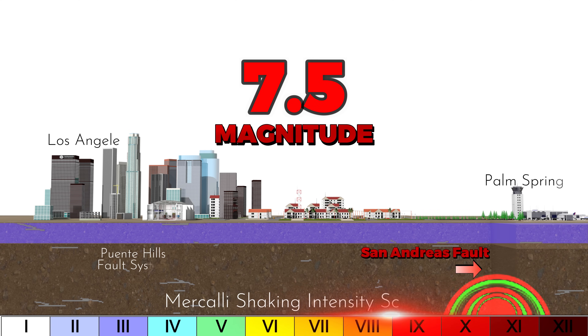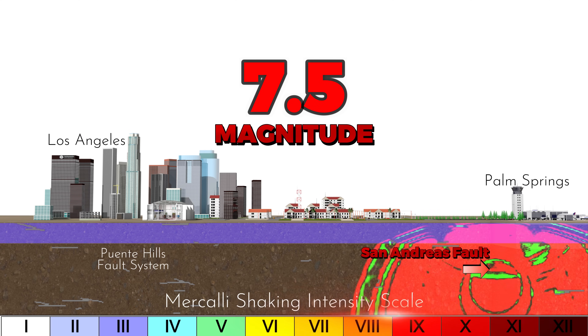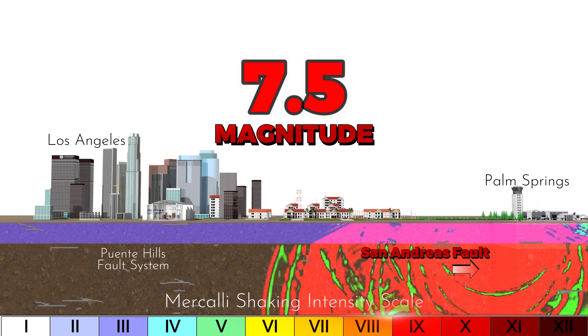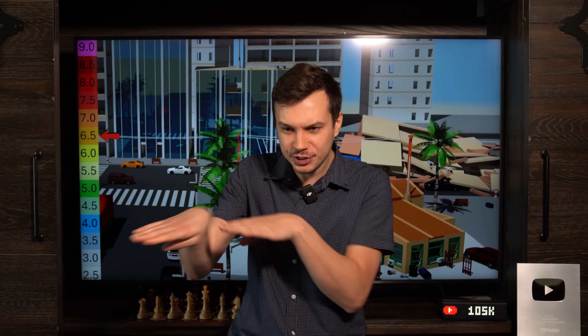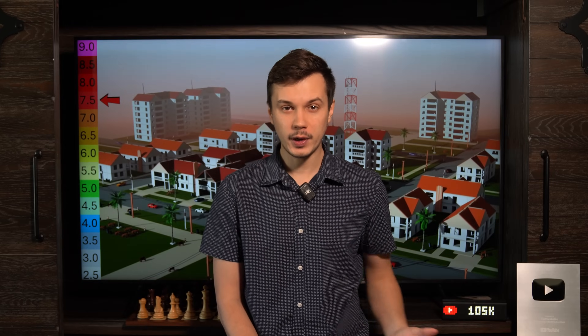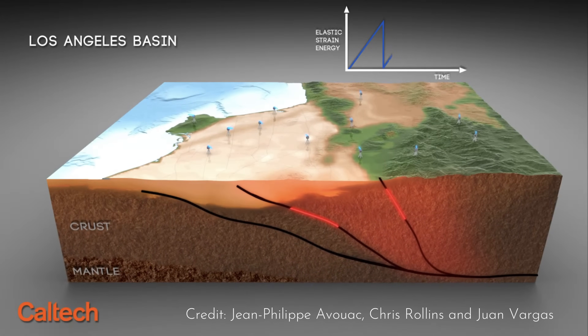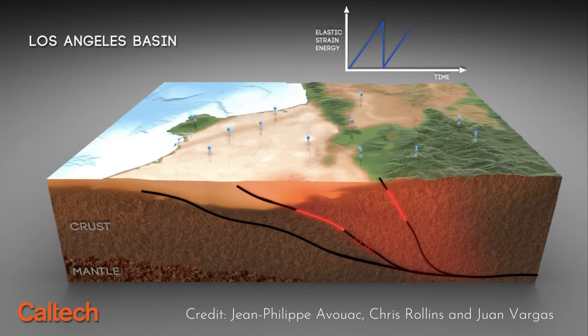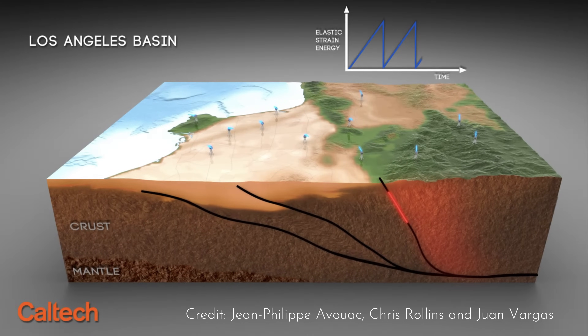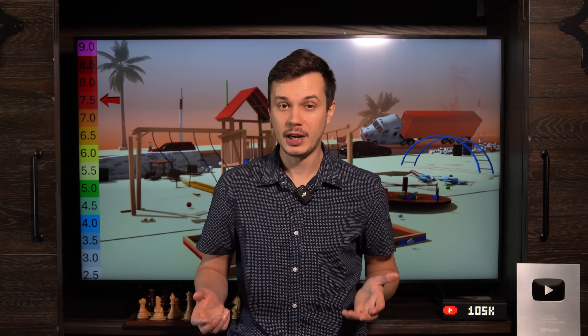Eventually, that built-up stress overcomes the friction holding the blocks together. When that happens, the blocks suddenly slip, sometimes by several meters along the fault line. That sudden release of stored energy sends out shock waves — seismic waves — through the ground. That sudden slip and energy release is what we experience as an earthquake. So let's see what a simulated strike-slip surface rupture looks like.